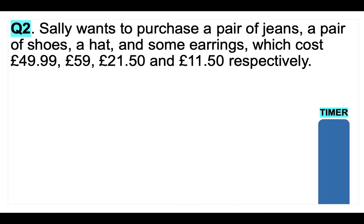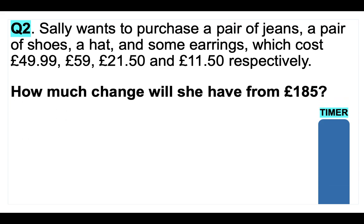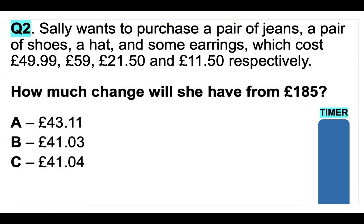Your question is: Sally wants to purchase a pair of jeans, a pair of shoes, a hat and some earrings, which cost £49.99, £21.50 and £11.50 respectively. How much change will she have from £185? Is it A) £43.11, B) £41.03, C) £41.04, or D) £43.01? You have the time the timer takes to go down to work out your answer and put it in the comments section below.